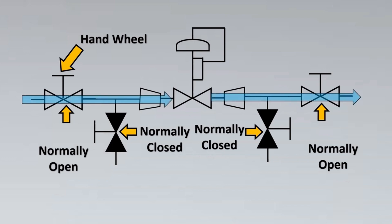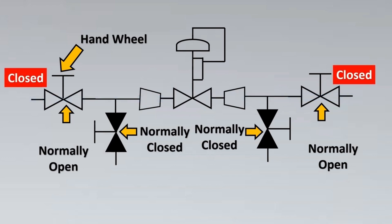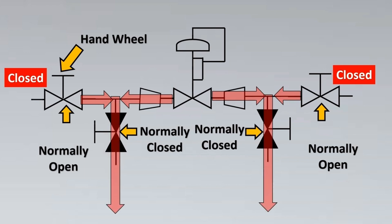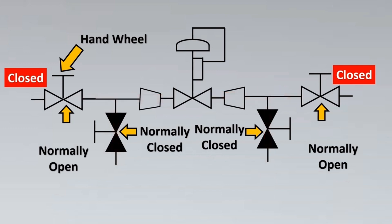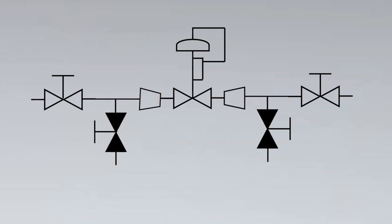In normal operation, the control valve allows flow to pass through it, as shown by the flow line. When we need to remove the control valve for maintenance or issues, we close the two isolation valves on either side. There is fluid trapped in between, so to fully isolate the control valve, we open the normally closed drain valves to drain the liquid out. Then we can safely remove the control valve from service. This NO/NC configuration is commonly used for isolation purposes.